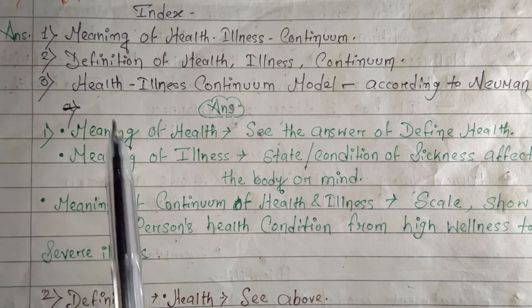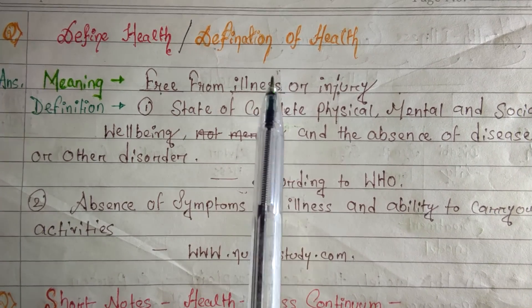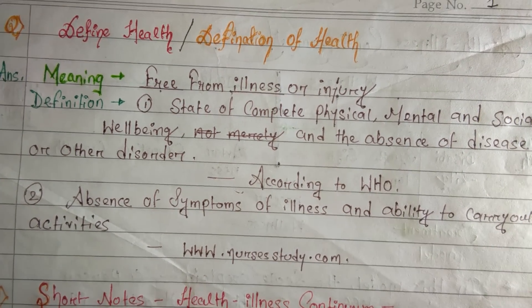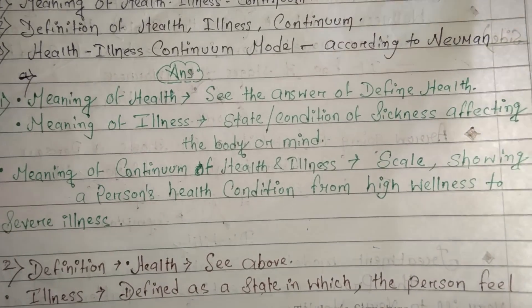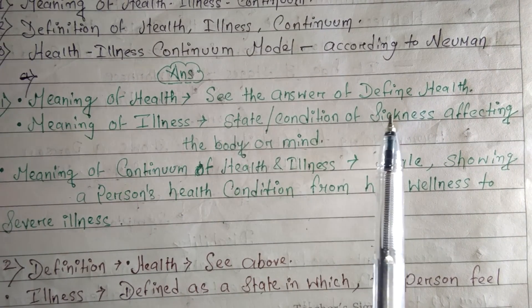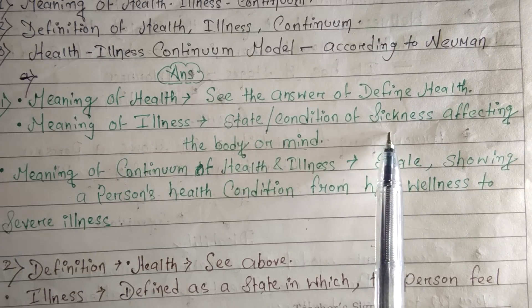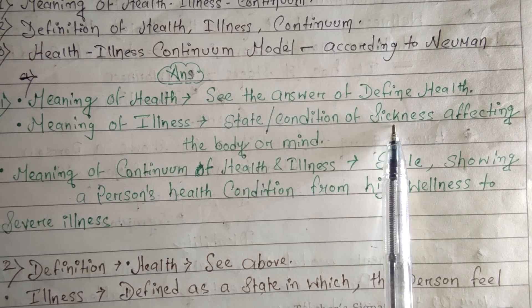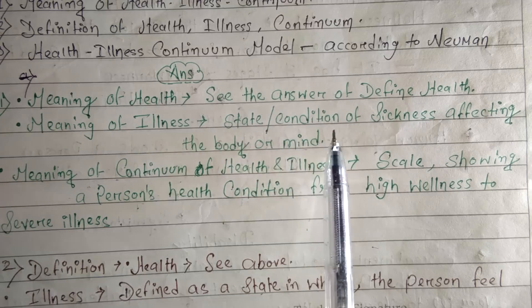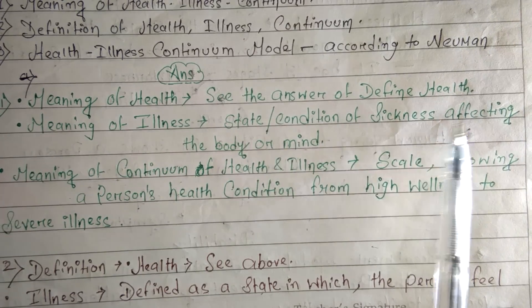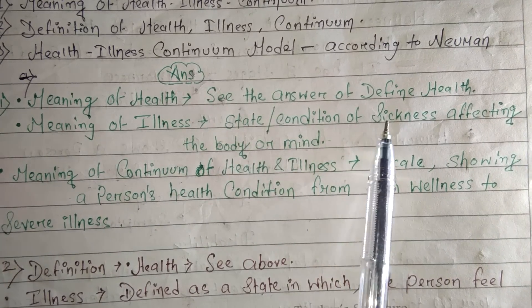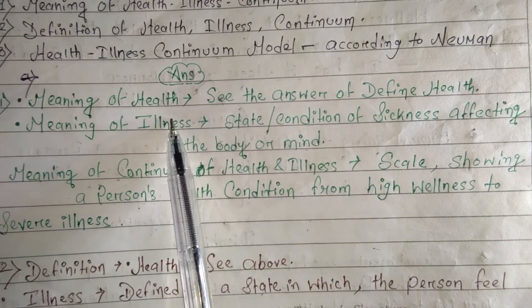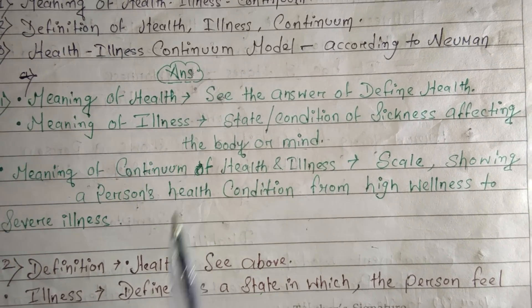So let's start with the first point: meaning of health. As I already told you, health means free from illness or injury. Now let's study the meaning of illness. Illness means a state or condition of sickness — when our body or our mind is not well, we are feeling very sick. That is called illness.